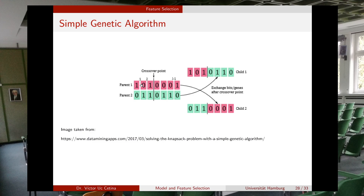One simple form is single-point crossover. You take parent one and parent two, randomly select a crossover position, then create child one by taking the first part of parent one and the second part of parent two, and child two by taking the first part of parent two and the second part of parent one.